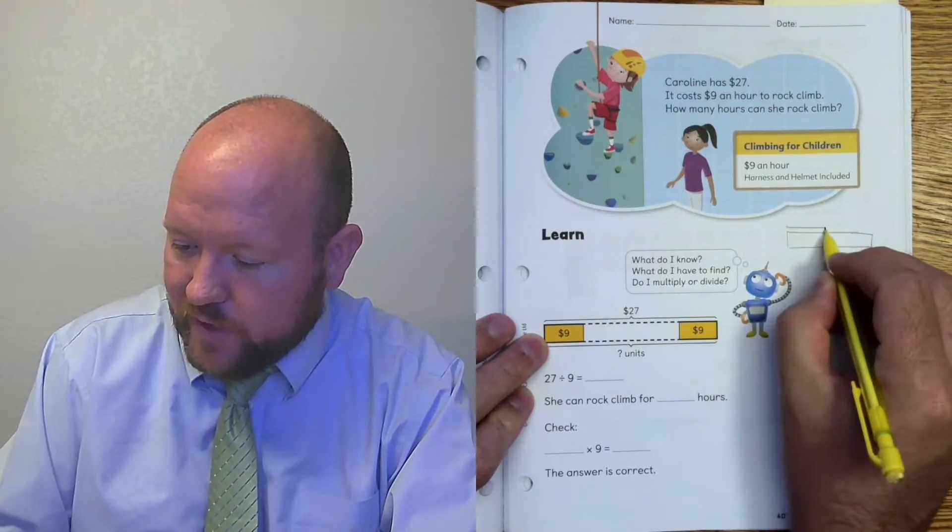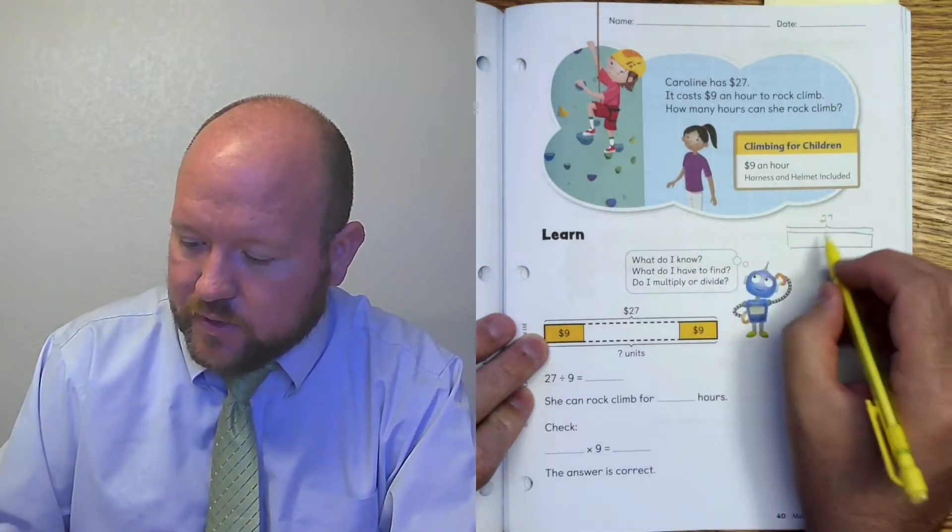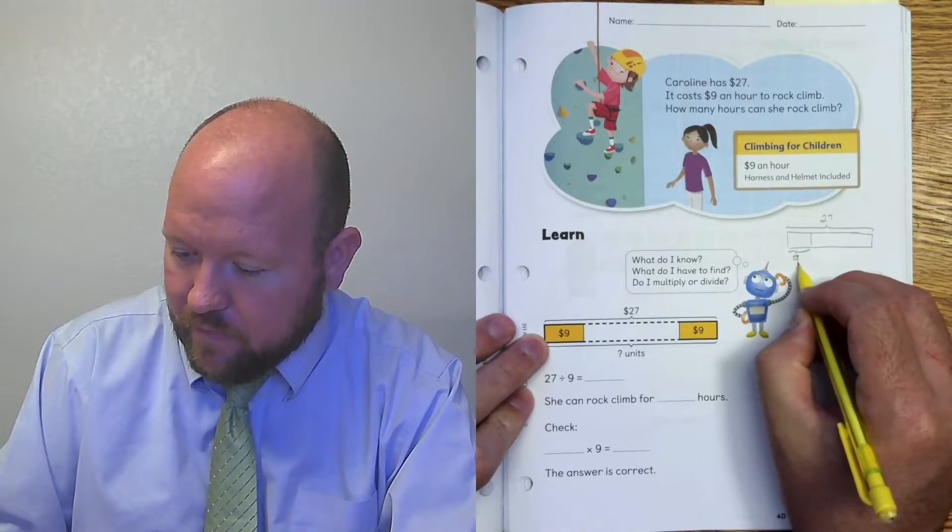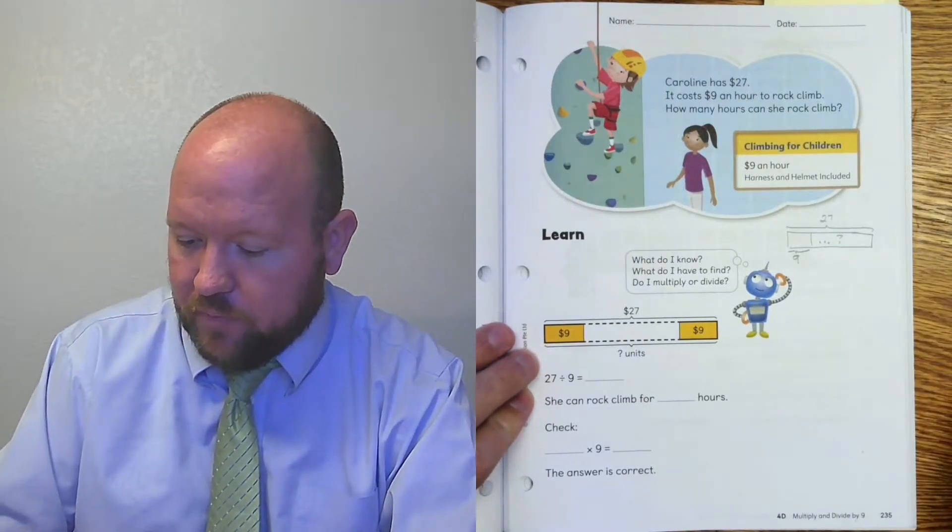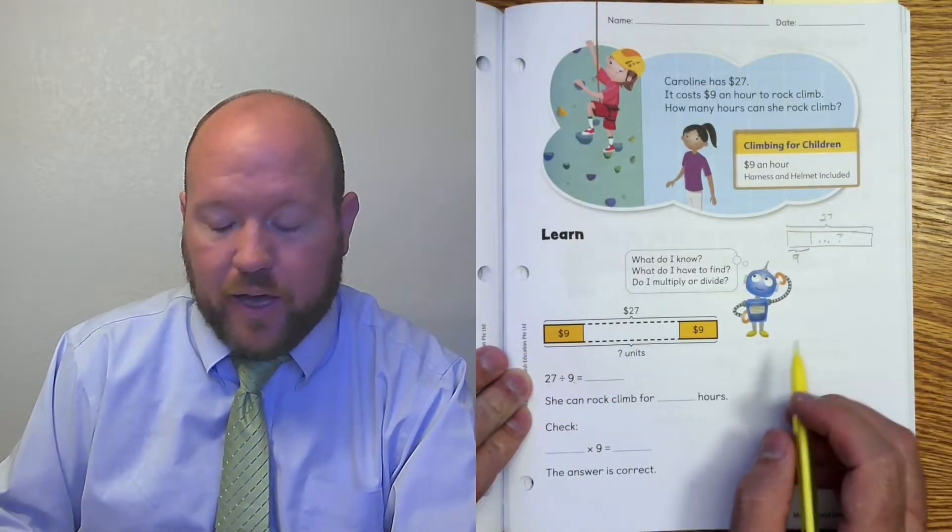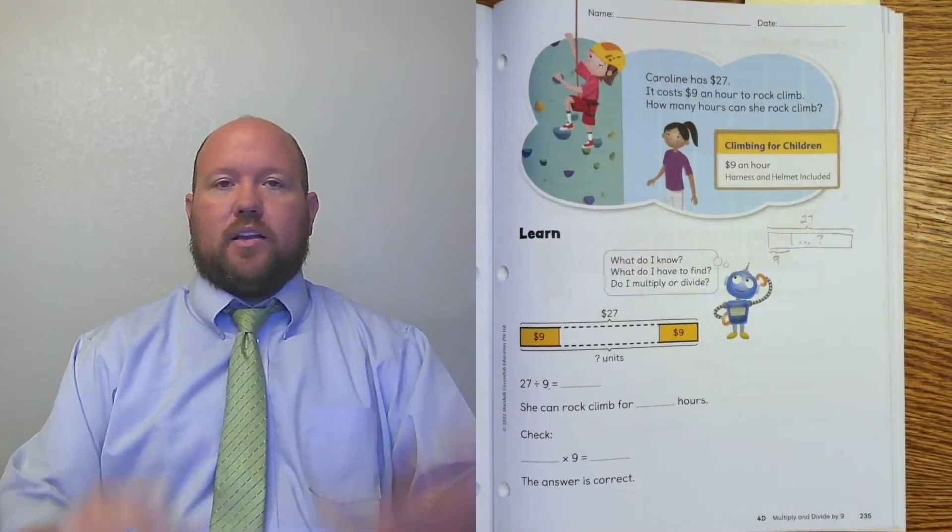So she has $27. It costs $9 an hour to climb. So we're looking for how many hours she can climb. What is 27 divided by 9? Hopefully you know that because you should know the facts for this number other than 9, but let's go ahead and look at it.